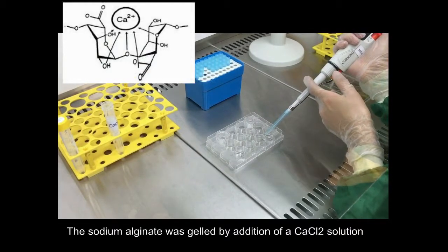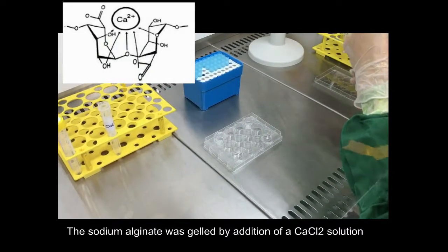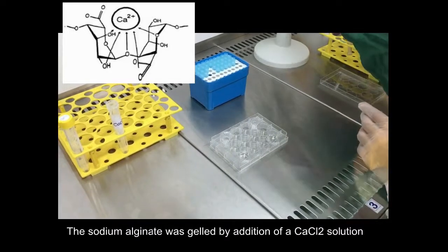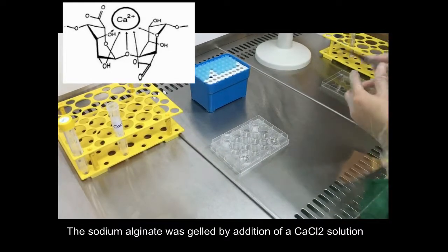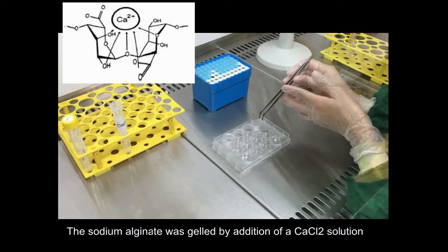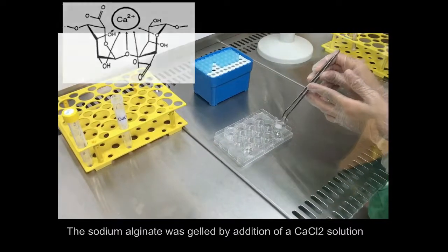Ionic cross-linked alginate hydrogels have been employed with different ions such as calcium, magnesium, or iron ions. Usually, calcium ion is one of the most commonly used divalent cations to cross-link alginate.